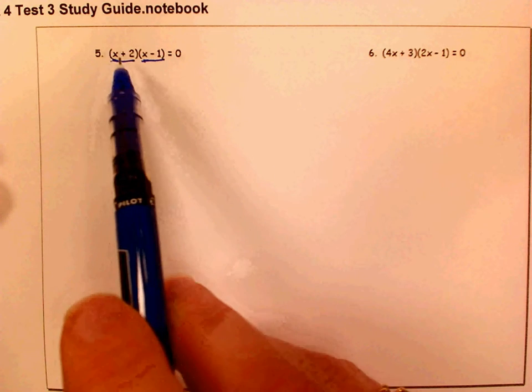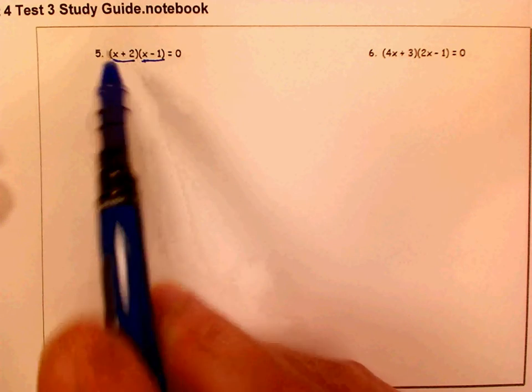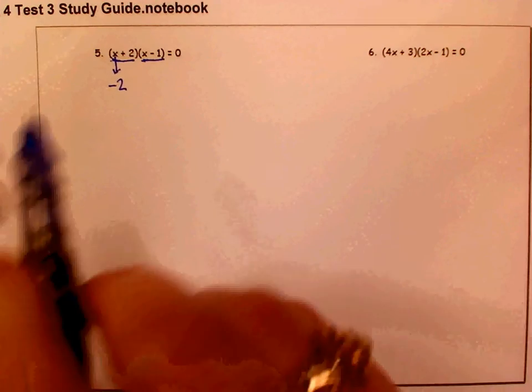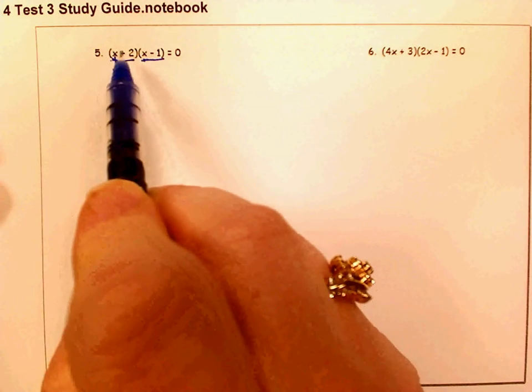So if we have x plus 2, if this is a positive 2, then we know that x would have to be the opposite of positive 2, which is a negative 2, to make that term zero. Negative 2 plus 2 is zero.